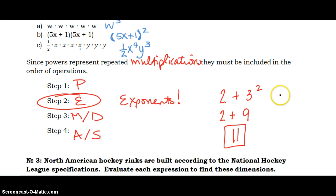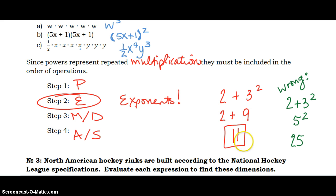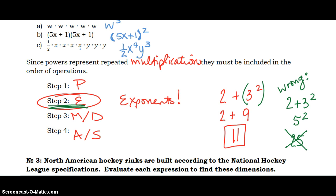What a lot of people will do — the wrong way — is they get in a hurry and say 2 plus 3, which is 5, and then they square 5 and get 25. There's a big difference between 11 and 25, and 25 is not the correct answer. You don't add first — you take care of your exponents first. That's step number 2. Then you can take care of addition or multiplication or whatever else is going to happen.